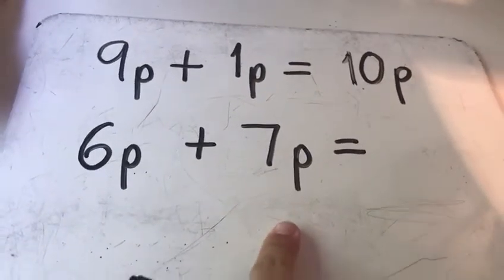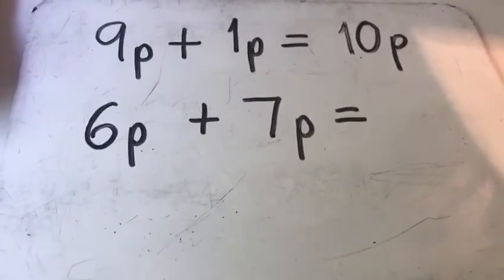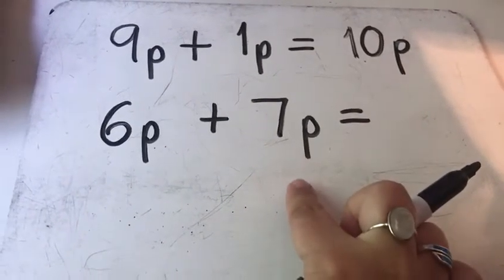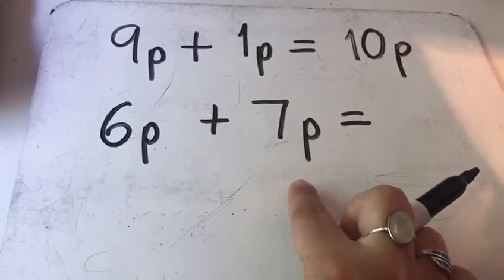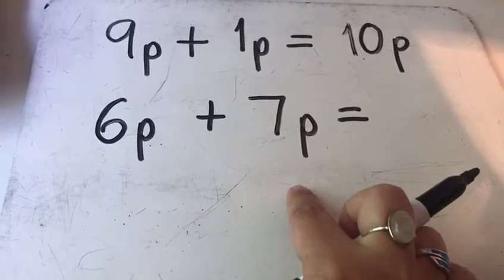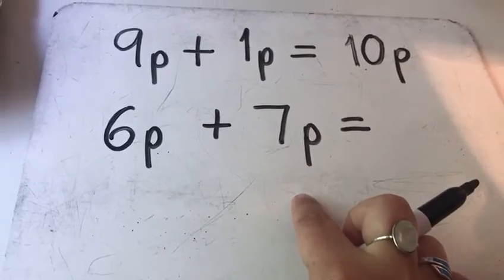So which skill do you think I'm going to use? Well 7 is not far off from 10 so I'm going to use bridging to 10. How much more do I need to add to 7p to make 10p?